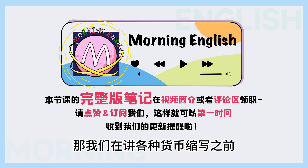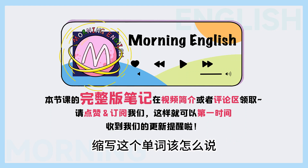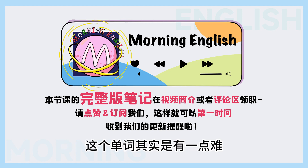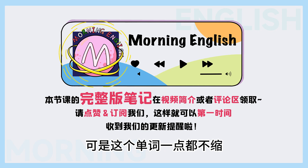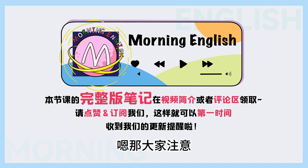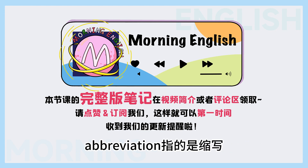Alright，那我們在講各種貨幣縮寫之前，我覺得可以先知道一下「縮寫」這個單詞該怎麼說。 I agree, the word is abbreviation. 這個單詞其實有一點難，它本身的意思是表示縮寫，可是這個單詞一點都不縮，就很長的，對吧？大家注意這個單詞它的音節發音是abbreviation. Abbreviation，指的是縮寫.